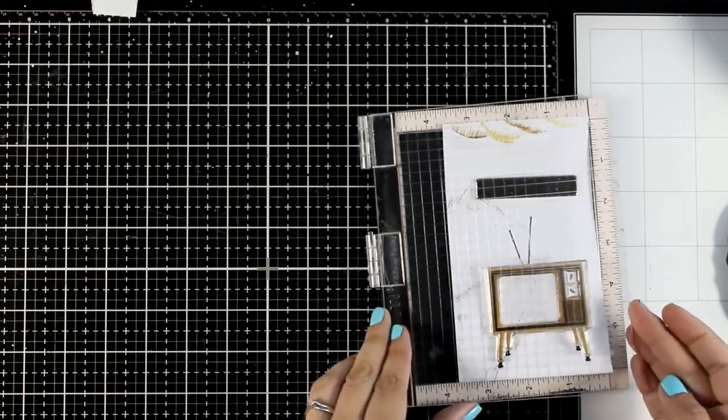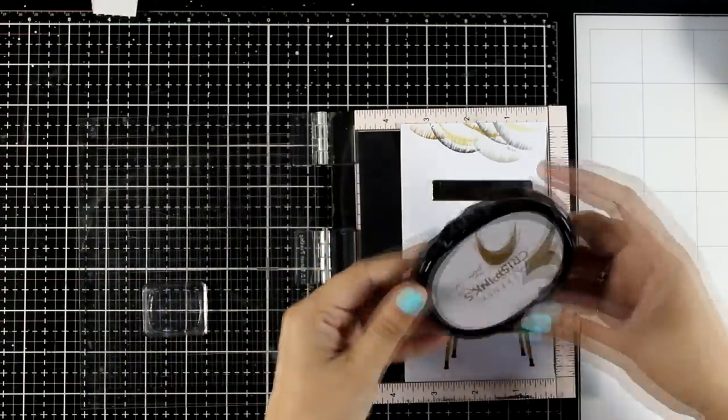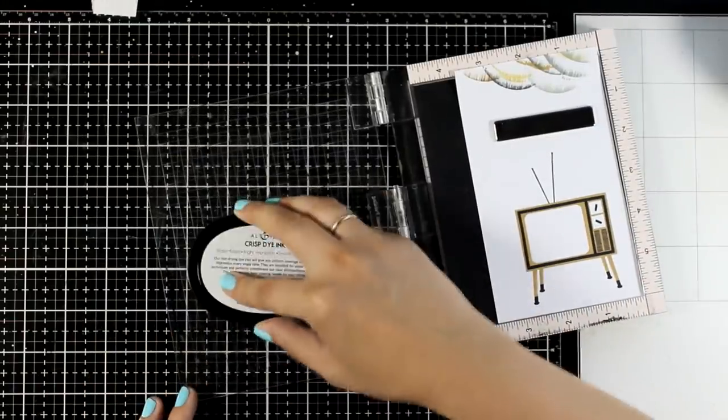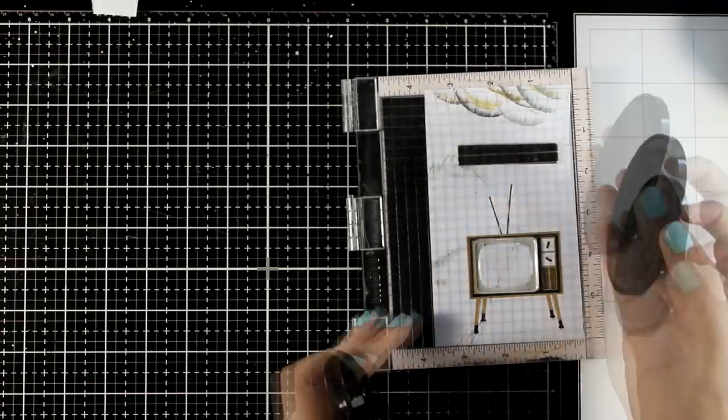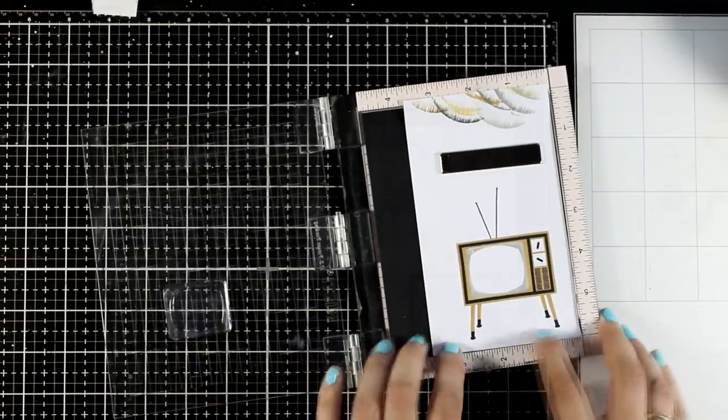This technique works with any focal point that you decide to stick on top of a pattern paper. It is going to make this focal point look as if it is part of the same collection. So here I am using gray, again I did swatch them to try and match that gray with the gray on the background paper as much as I could.